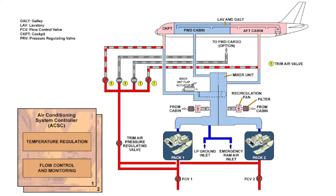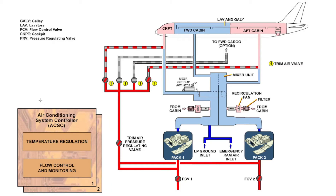First of all, you have two computers which control the system — the Air Conditioning System Controllers (ACSC). ACSC one controls pack one, and ACSC two controls pack two. One important thing to remember: the flow calculation is done by ACSC one only. So even for pack two, the calculation is done by ACSC one, which then sends the signal to ACSC two, and accordingly ACSC two controls its valve to get the required temperature output from the packs.